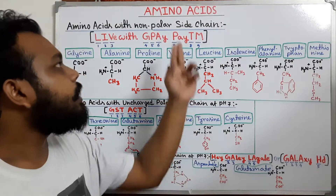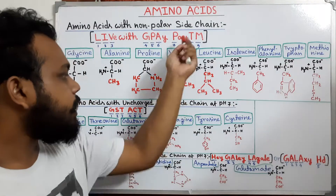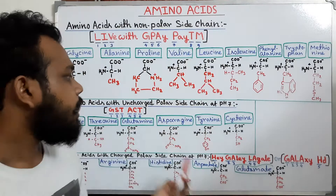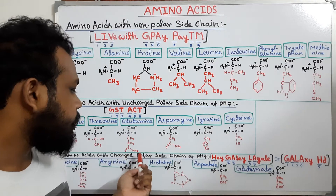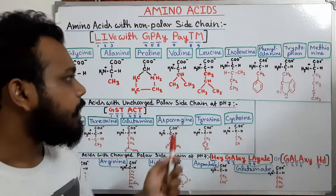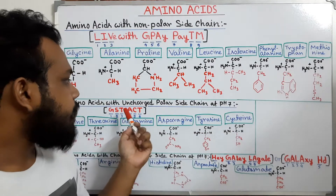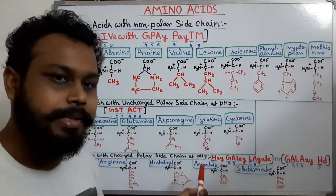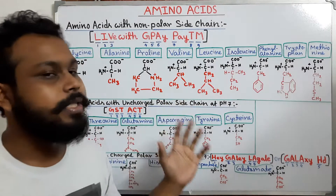Those 20 amino acids are categorized into three groups according to their side chain. Those groups are: amino acids with non-polar side chain, amino acids with uncharged polar side chain, and amino acids with charged polar side chain. In the non-polar side chain group, nine amino acids are present; in the uncharged polar side chain group, six amino acids are present; and in the charged polar side chain group, five amino acids are present.